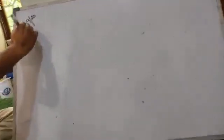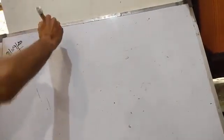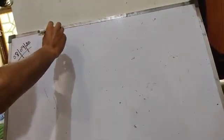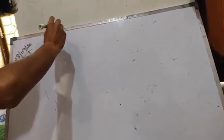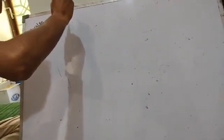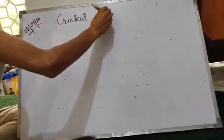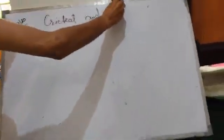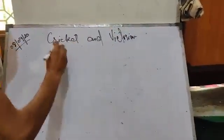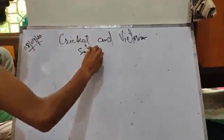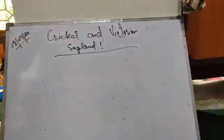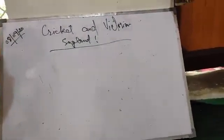Today's date is 8/9/2020. Today's topic is about cricket and Victorian England, as we discussed yesterday. Page number 168, section 1.1: Cricket and Victorian England.